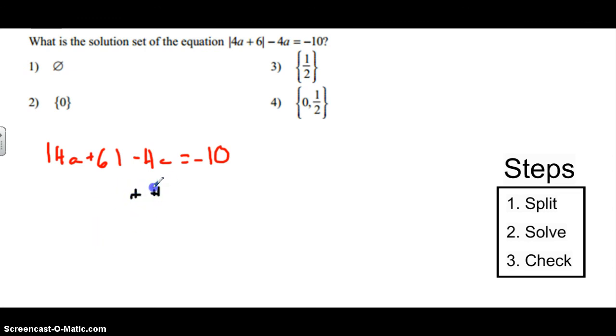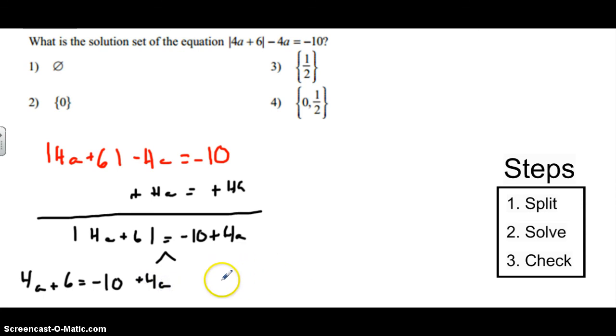First thing we want to do is isolate. So we're going to add 4a to both sides. Plus 4a, plus 4a. And we get the absolute value of 4a plus 6 is equal to negative 10 plus 4a. Next step, we're going to split this guy. Positive and negative. So we have 4a plus 6 is equal to, well, what we already started with, negative 10 plus 4a.